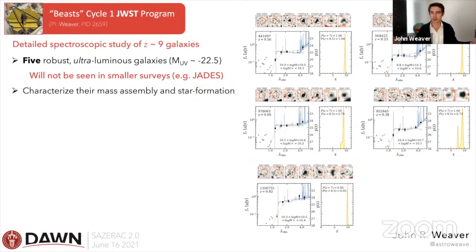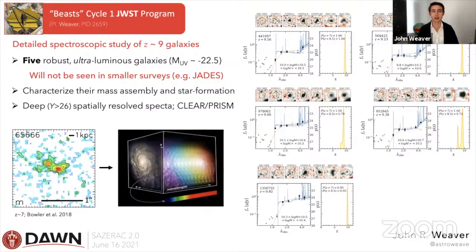To answer these problems, we're going to JWST. We have a JWST Cycle 1 program — I am the PI — that will perform a detailed spectroscopic study of five ultra-robust, ultra-luminous galaxies selected from this UV luminosity function work. These sources wouldn't be seen in smaller surveys. We will use deep, wide (greater than 26 AB) spatial rest-frame spectra from NIRSpec CLEAR/PRISM mode to characterize their mass assembly and star formation, and we will use integral field spectroscopy to turn these redshift 9 sources into full data cubes to study multiple sight lines across the galaxy spectroscopically for the first time.